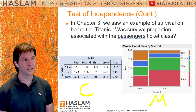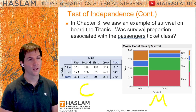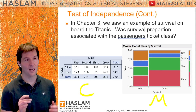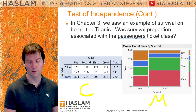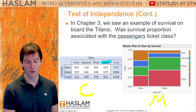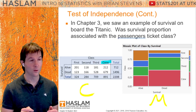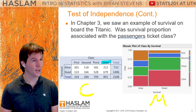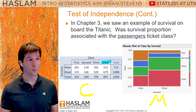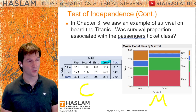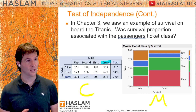Counts doesn't make it quantitative data, because you'd have to ask the questions categorically: Were you in the crew, third, second, or first class? That's categories. Was the person dead or alive? That's categories.